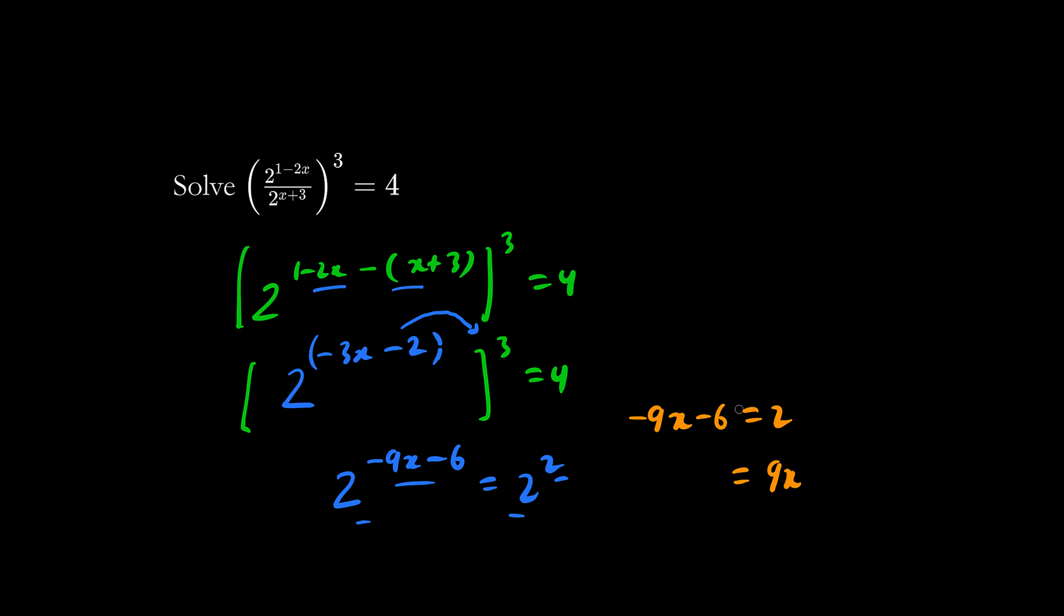So therefore 9x equals negative 6 minus 2 is negative 8. So x equals negative 8 over 9.